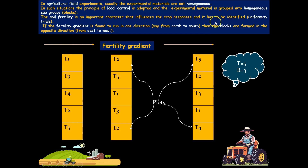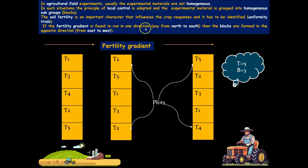The shape and size of the block are very important. It is advisable to use a rectangular-shaped plot with its long side parallel to the direction of the fertility gradient. Soil fertility influences crop responses, and the procedure used to identify the fertility gradient in field experimental designs is called uniformity trials. If the fertility gradient runs in one direction, say north to south, the blocks have to be formed in the perpendicular direction — for example, from east to west.